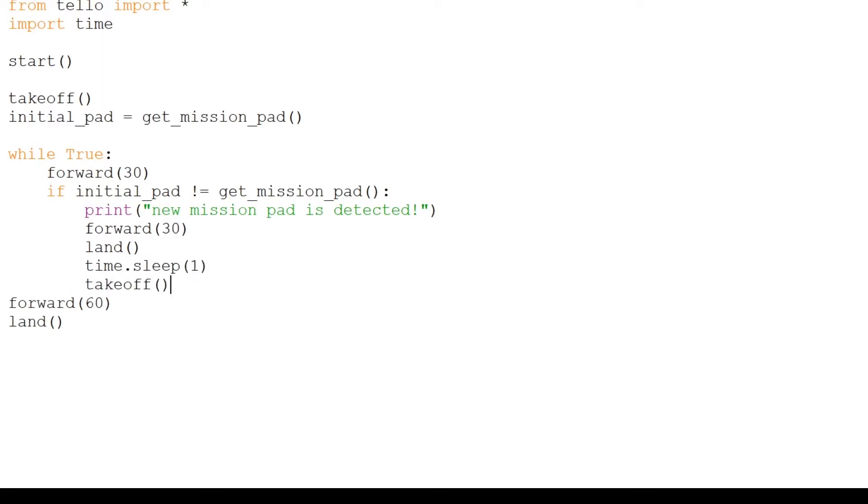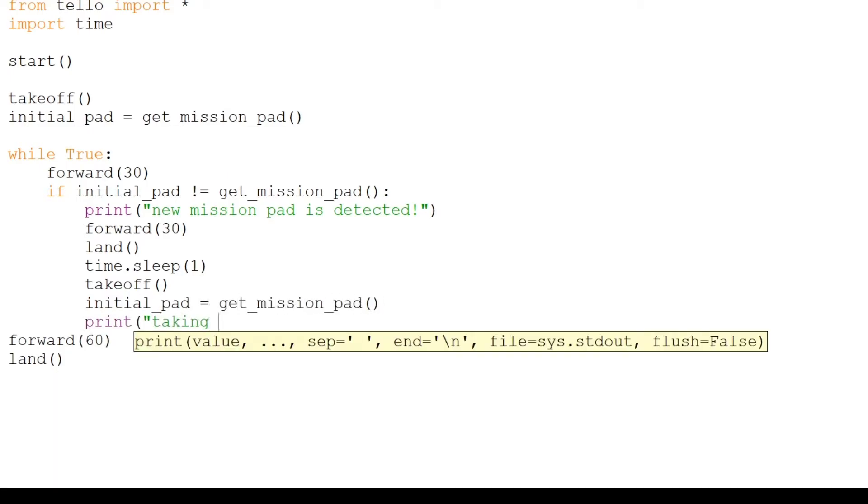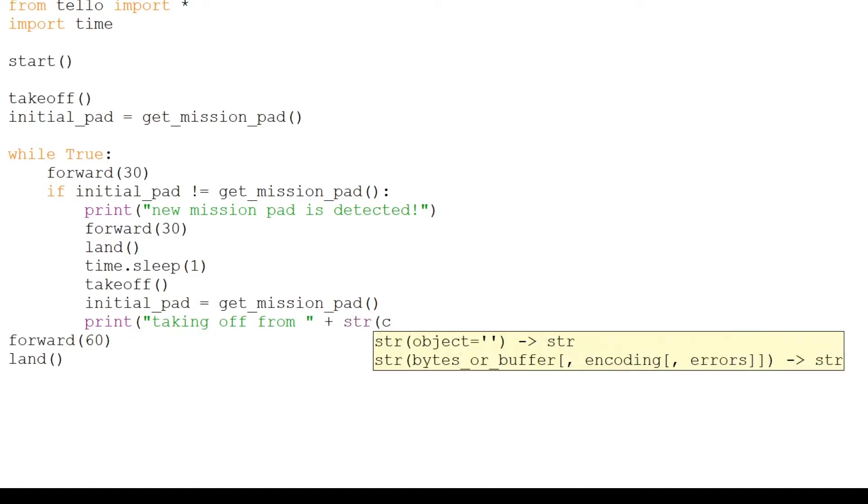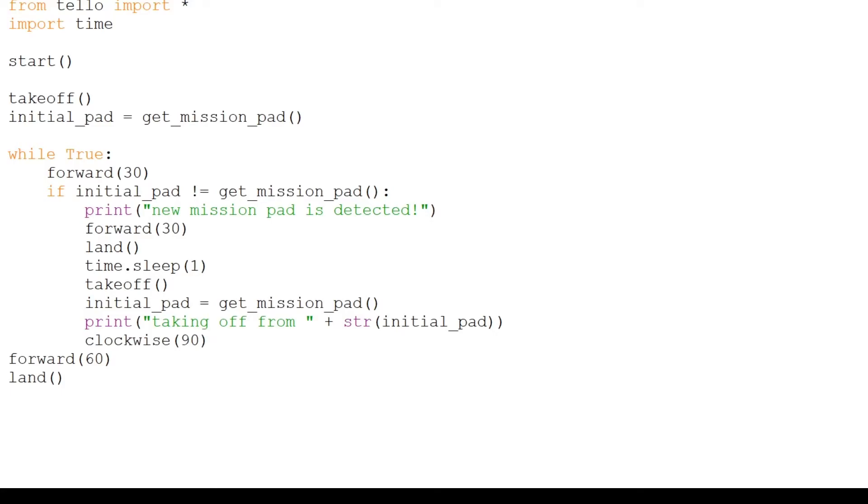We will then take off, reset the initial pad to the latest pad it sees, print the new initial pad and finally turn clockwise 90 degrees. Since our program goes on forever, we can remove the last two lines.